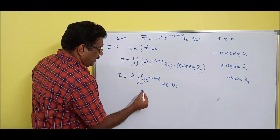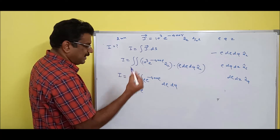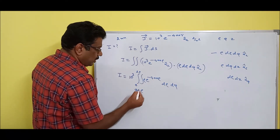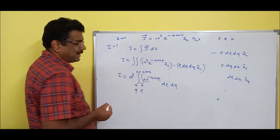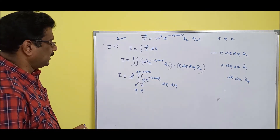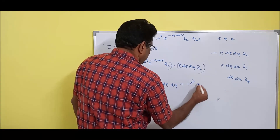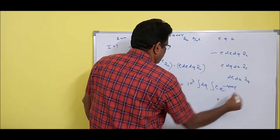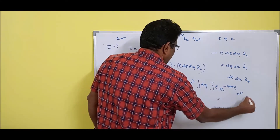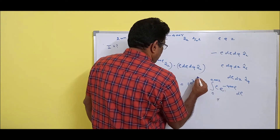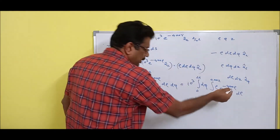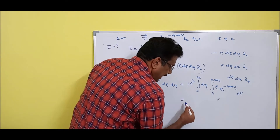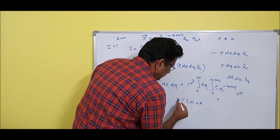Az dot Az equals 1, so one integration is for ρ and the other is for φ. For a cylinder, φ varies from 0 to 2π, and ρ is the radius — 2 mm, so from 0 to 0.002 meters. Splitting: 10³ times the integral from 0 to 2π dφ times the integral from 0 to 0.002 of ρ e^(−400ρ) dρ. This requires integration by parts, but you can use a calculator directly to get the answer: 7.51 milliamperes.